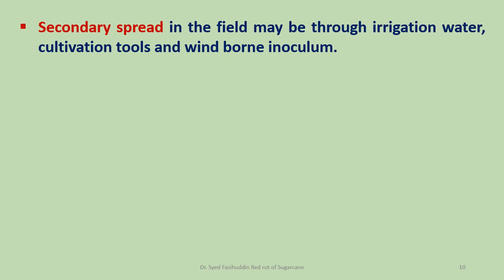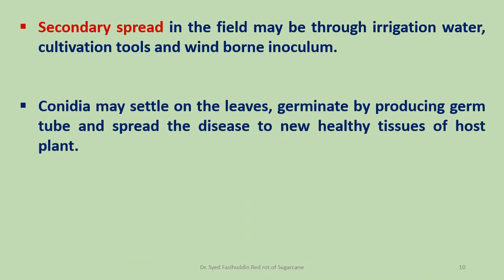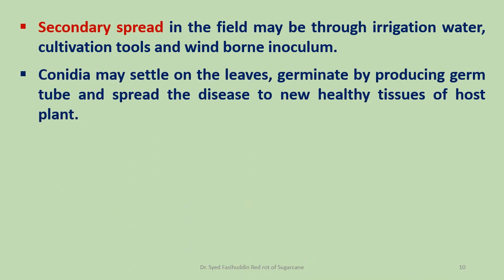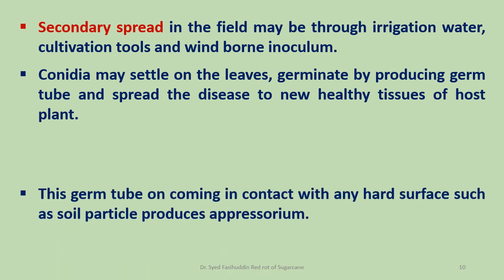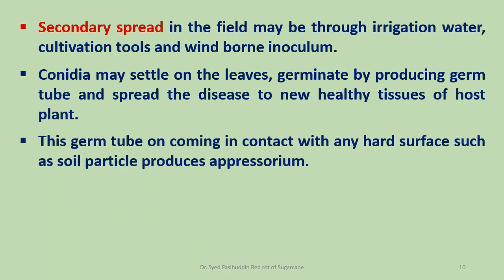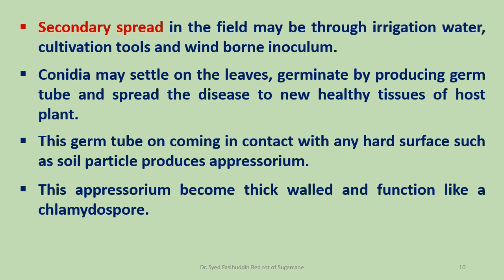Secondary spread in the field may occur through irrigation water, cultivation tools, and wind-borne inoculum. Conidia are disseminated by wind, rain, irrigation water, and insects. They may settle on leaves, germinate by producing a germ tube in the presence of water, and cause secondary infection, spreading the disease to new healthy tissue. The germ tube, on coming in contact with any hard surface such as soil particles, produces an appressorium. This appressorium becomes thick-walled and functions like a chlamydospore, which can survive in soil for a long time.